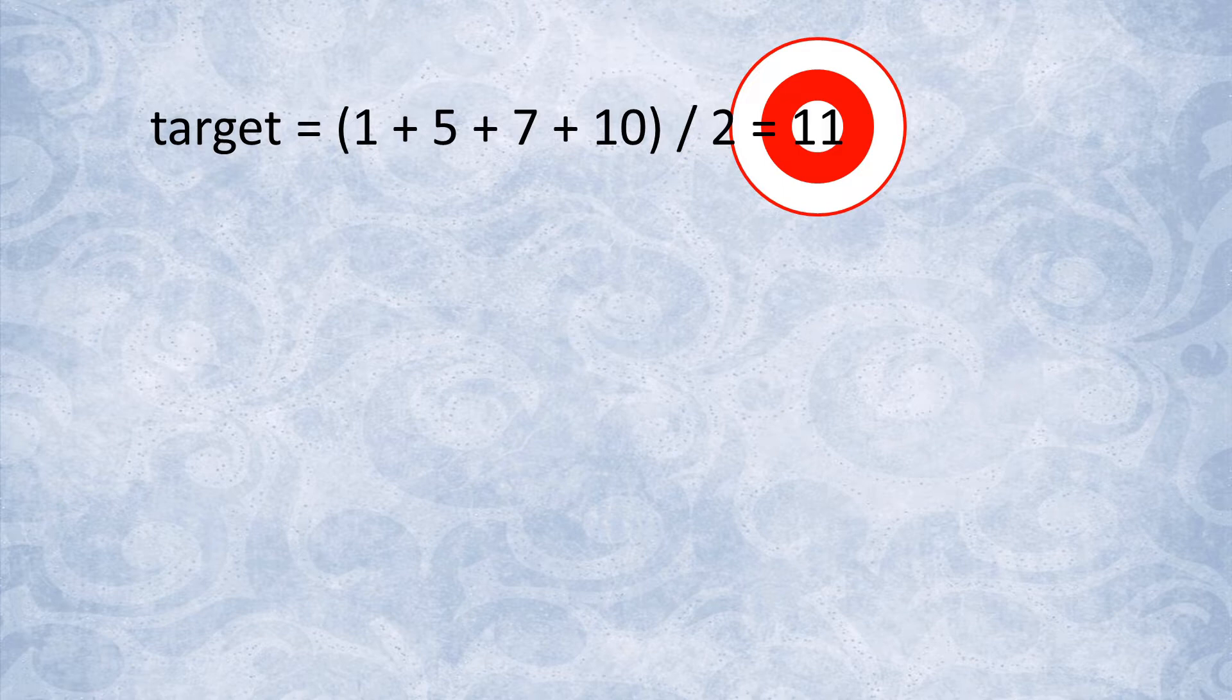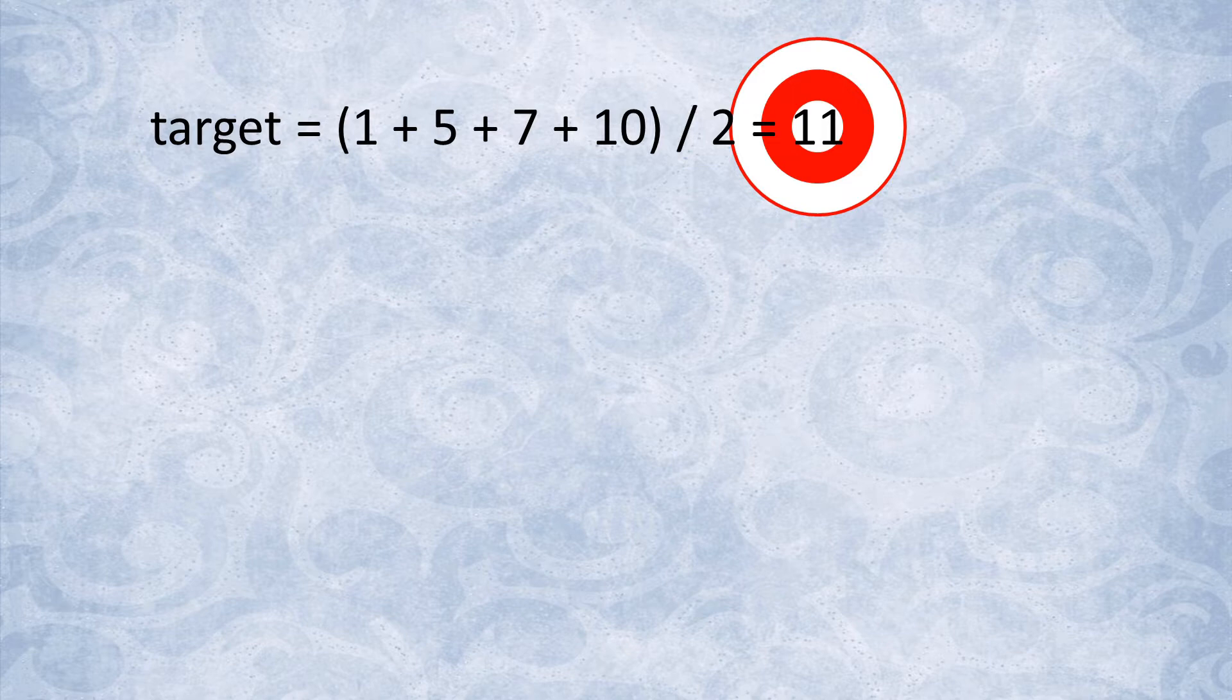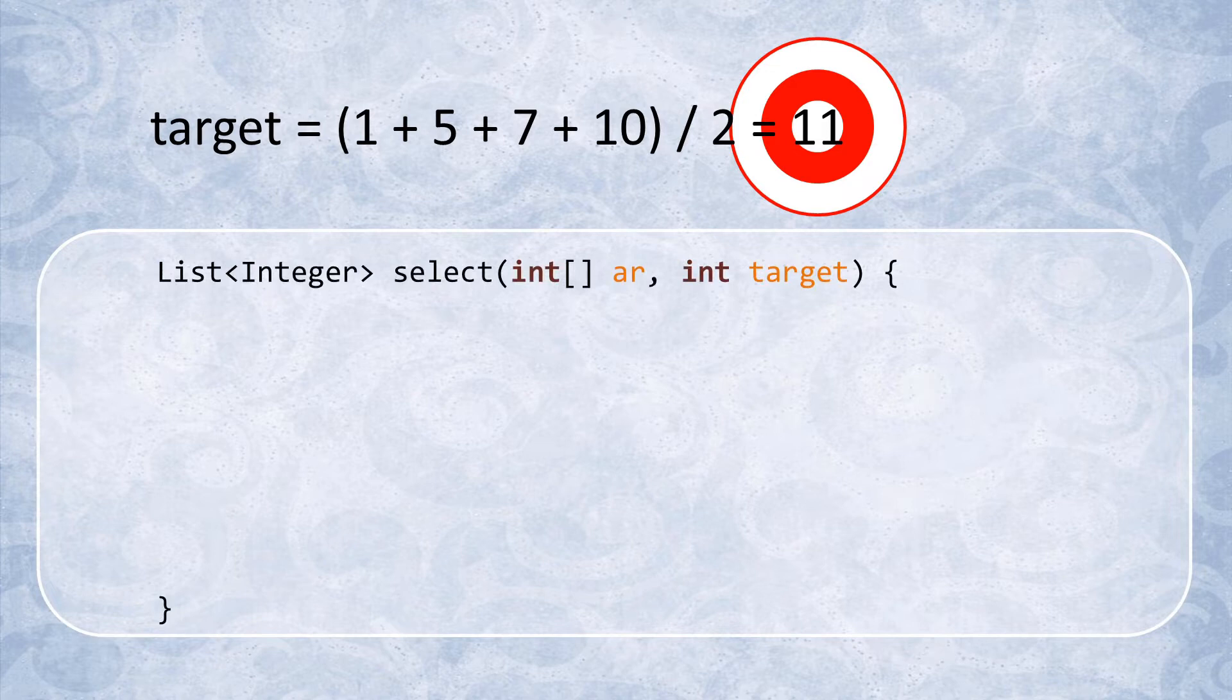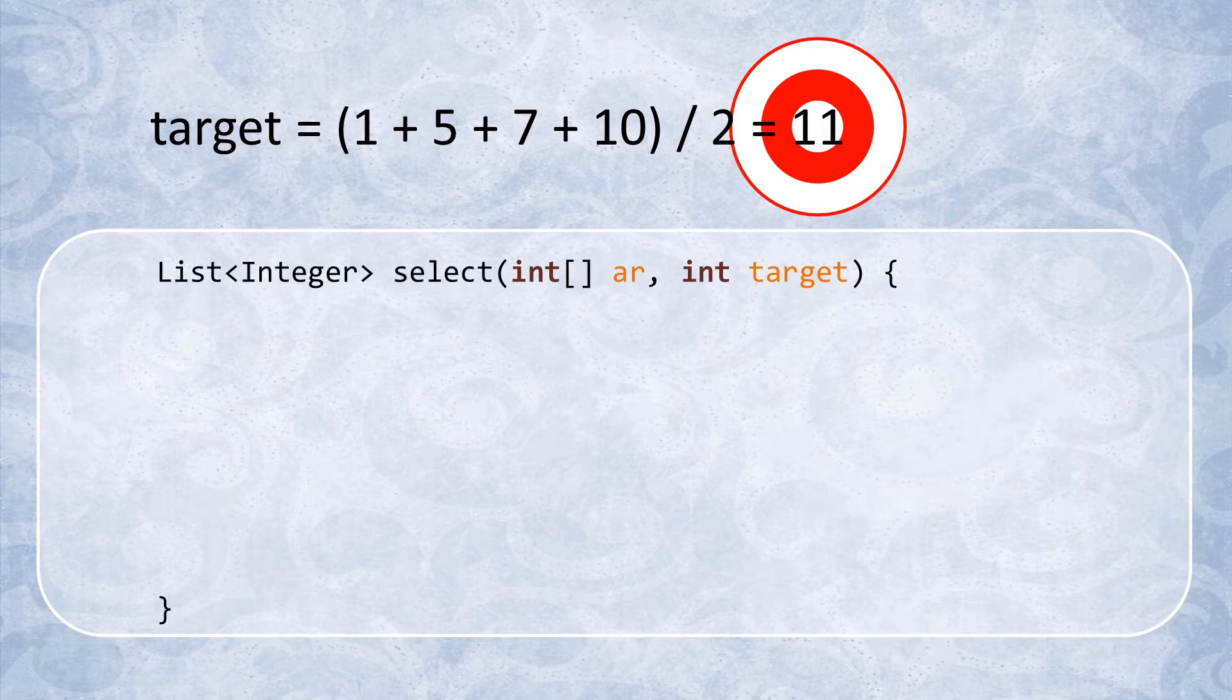We can make things a little easier if our function were to just return one of the partitions. Later on, we can trivially select all the remaining numbers to construct the second partition. With that, our function begins to take shape. It takes in an input array of integers and a target value, which is half of the total sum of values across the whole array.